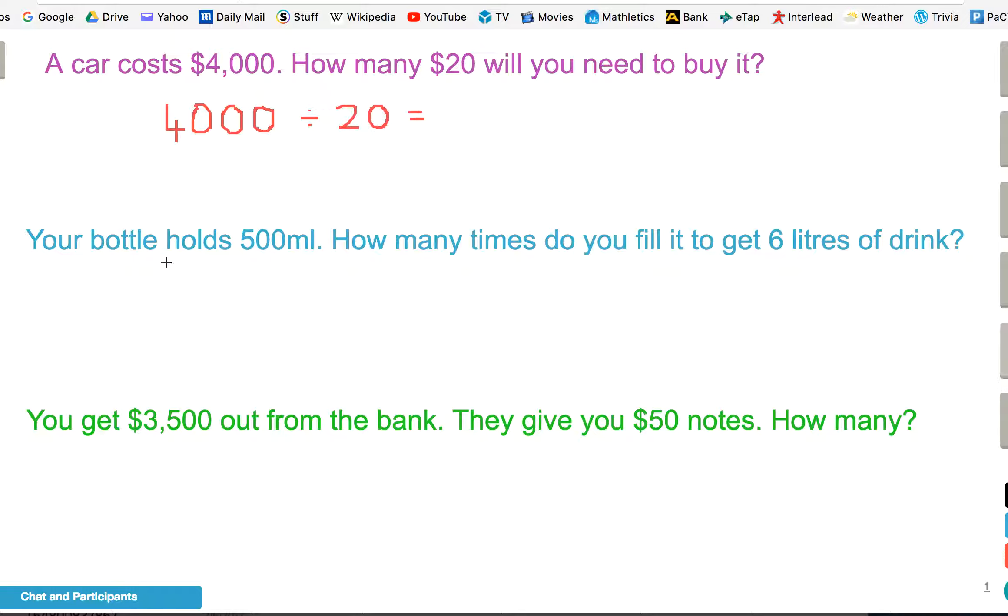Obviously we're going to have to divide our cost, $4,000, by 20 to find out how many $20 notes we'll need. The first thing we look at is, is there a basic fact that we know? Well yes, there is. We know 4 divided by 2. So we can do 4 divided by 2, which is of course 2. But it's not 4 divided by 2, it's 4,000 divided by 2. So we pop in the three zeros. 1, 2, 3.